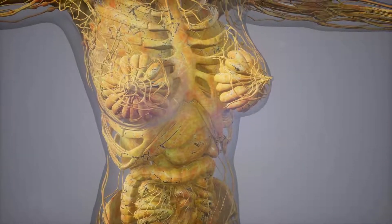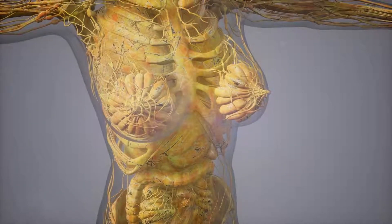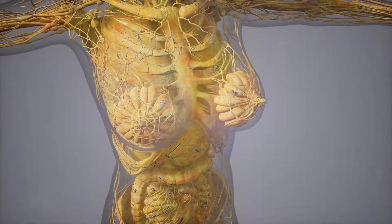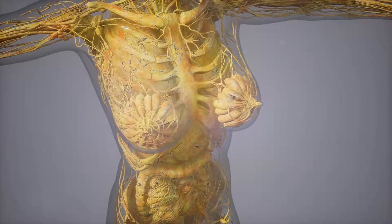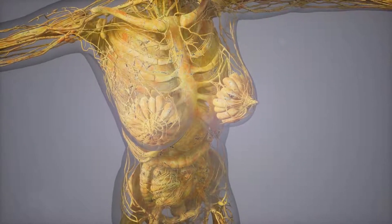If organs become severely damaged and start to fail, their inability to function can also cause systemic organ failure, in which one organ's malfunctioning starts to affect other organs as well.